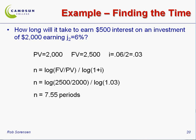And so how do we get from 7.55 periods to years? Well we'll take our number for n and we'll divide that by two to get 3.77. And that's the final answer.